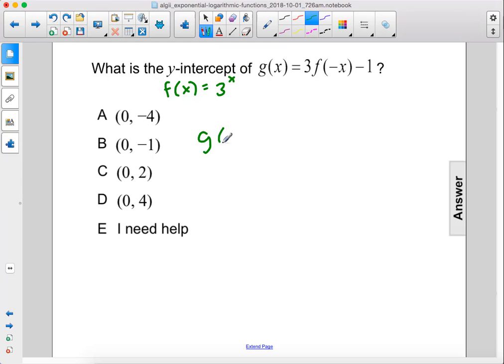Therefore, g(x) = 3 times 3^(-x) minus 1. So we can rewrite this as 3 divided by 3^x minus 1.